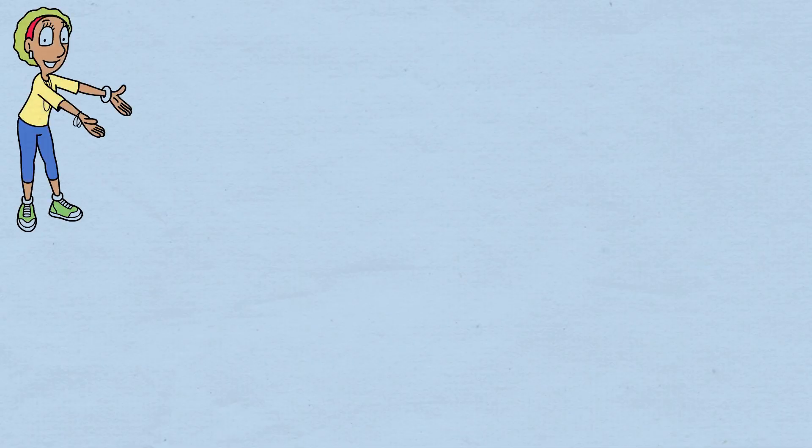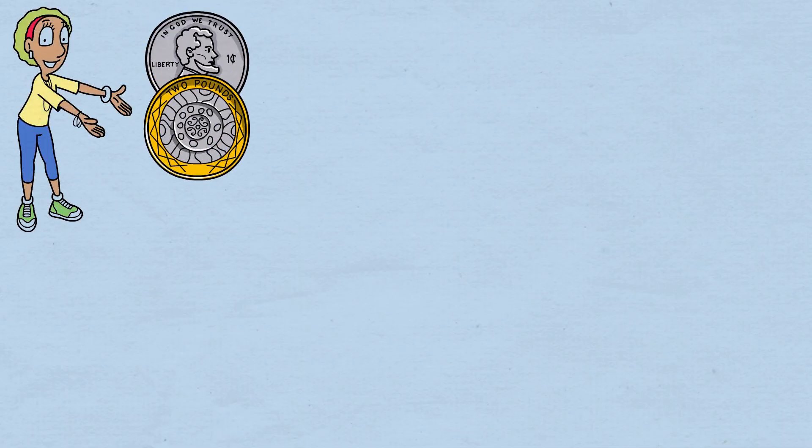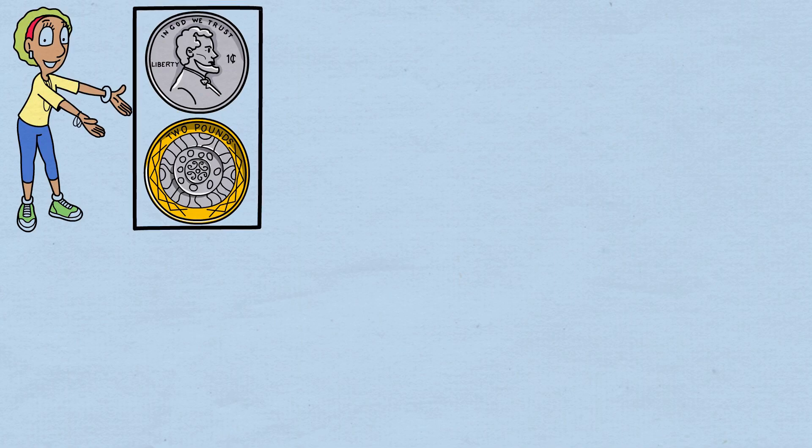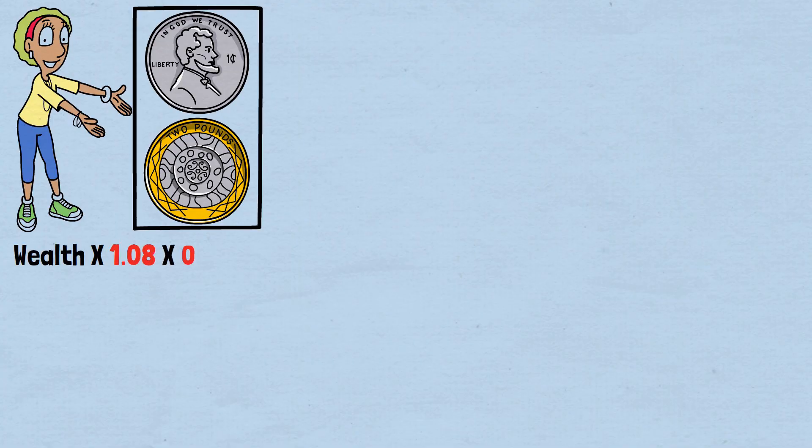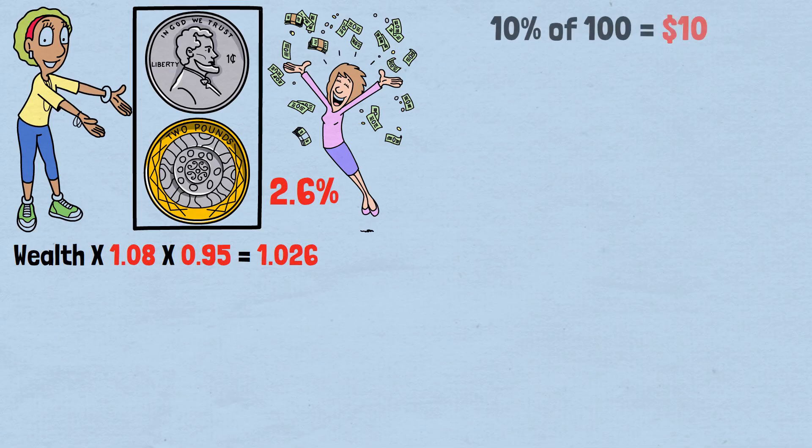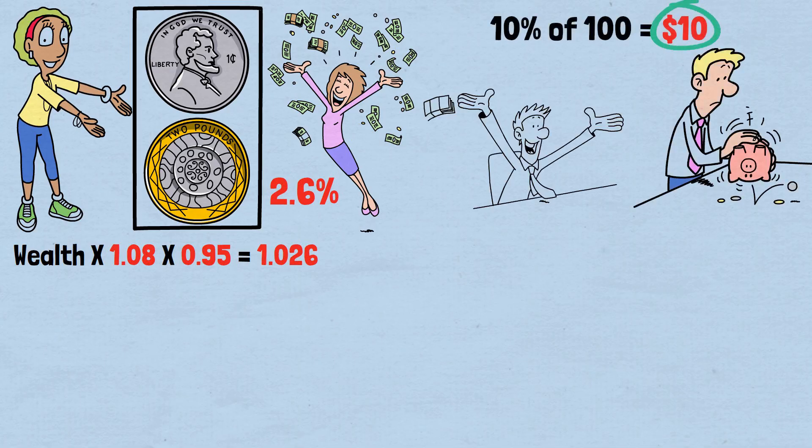Now here's the crucial insight. If we flip one heads and one tails, the most common outcome, our wealth gets multiplied by 1.08 times 0.95 equals 1.026. We end up with 2.6% more money than we started with. By betting only a fraction of our wealth, we've transformed a losing game into a winning one.